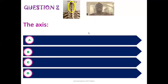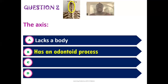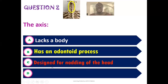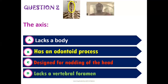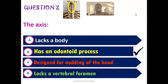The second question: which statement is true of the axis? Options include: the axis lacks a body, the axis has an odontoid process, the axis is designed for nodding, or the axis lacks a vertebral foramen. The correct answer is that the axis has an odontoid process. The axis is the second cervical vertebra, and its distinguishing feature is the presence of a dens, or odontoid process.